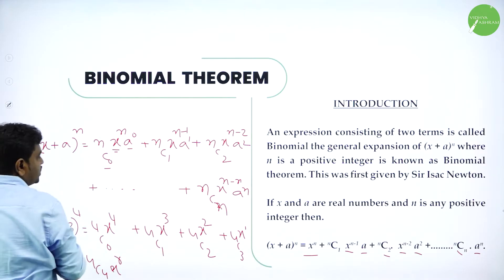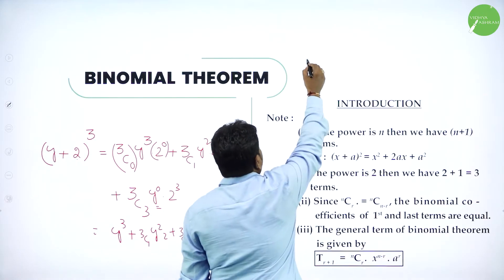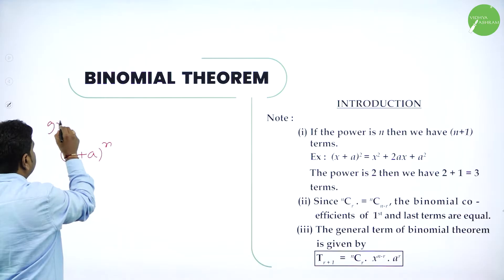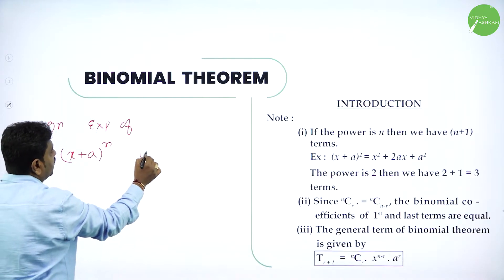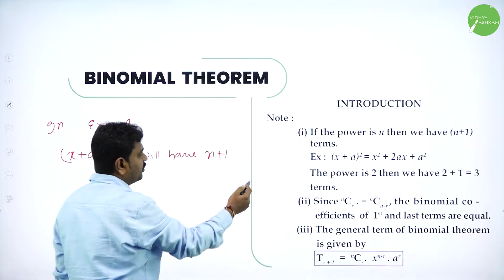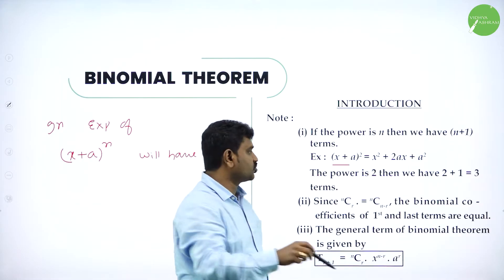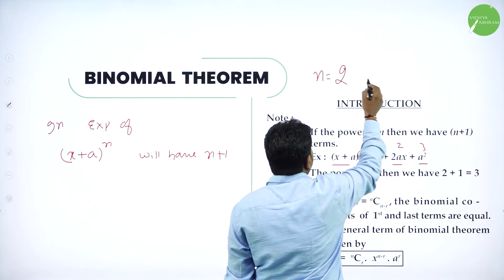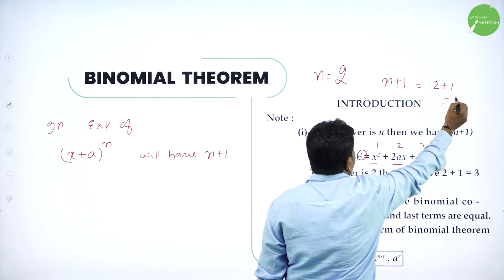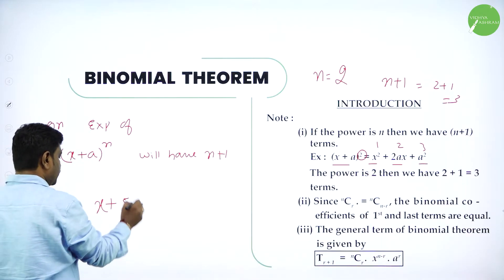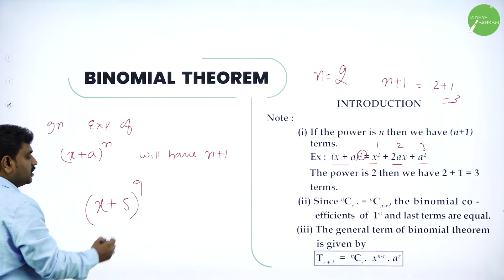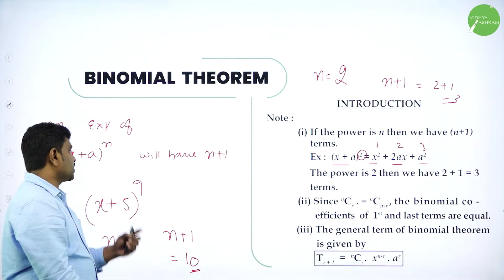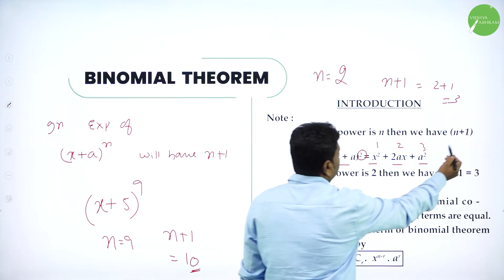In the expansion of x plus a power n, we will have n plus 1 terms. For example, a plus b whole square gives a square plus b square plus 2ab — that is 3 terms, and power is 2, so n plus 1 equals 2 plus 1 equals 3 terms. So if you have x plus 5 power 9, there will be 9 plus 1 equals 10 terms in the expansion. In expansion of x plus a power n, there will be n plus 1 terms, that is power plus 1 terms.